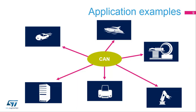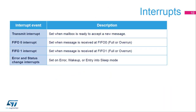The controller area network CAN bus was originally designed for automotive applications but is now also used in many other contexts. Here is a summary of CAN interrupt events: transmit, receive buffers for FIFO 0 and FIFO 1, and error and status change interrupts.